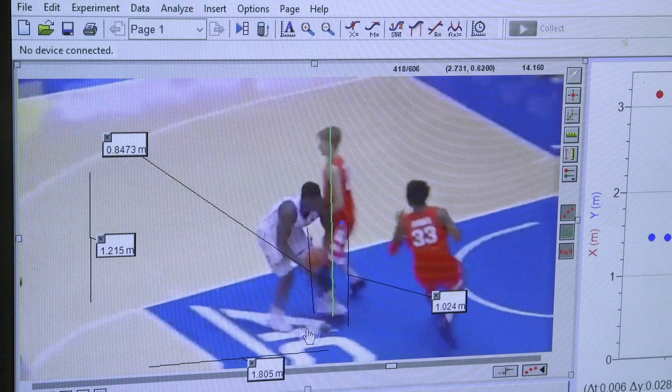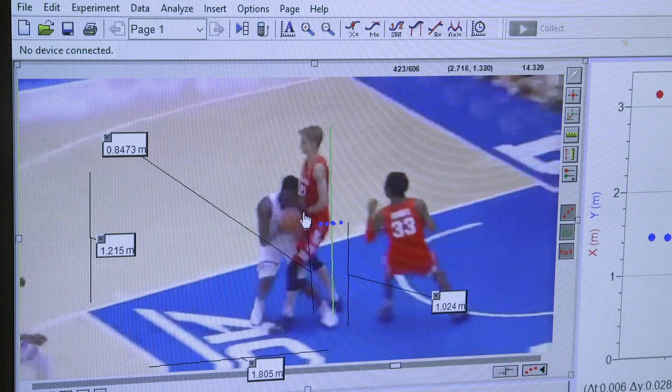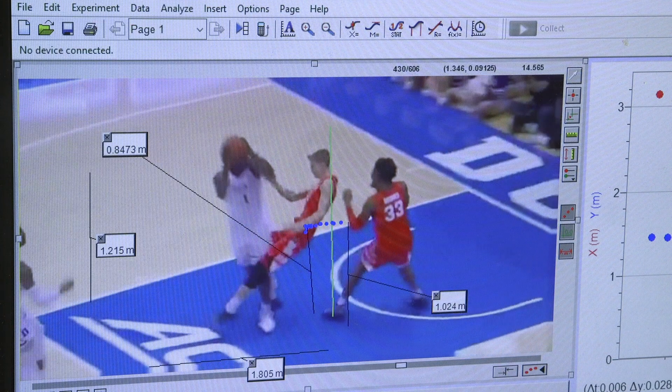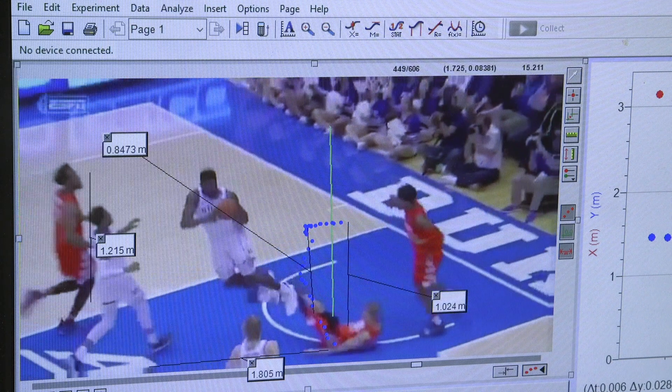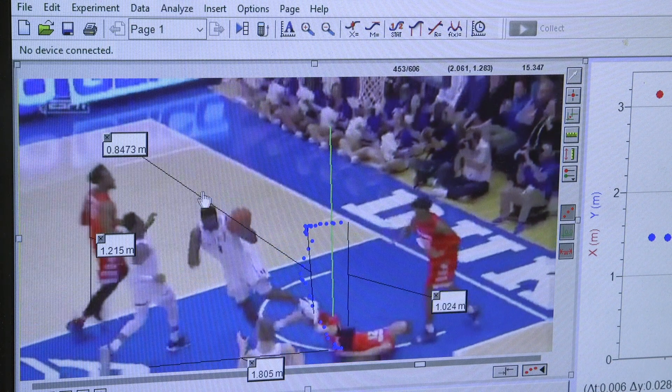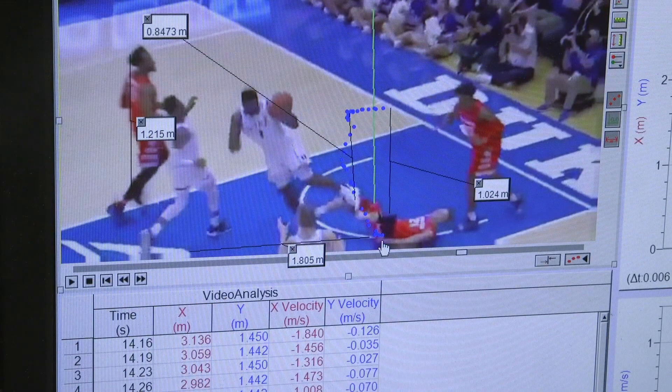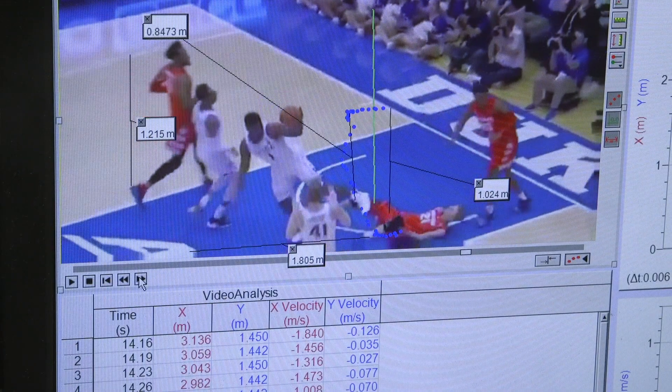His hips started at about one and a half meters, ballpark, and then he lands on the ground. So his hips are a little above the ground, right? The center of his hip. So this shows you how far he fell.